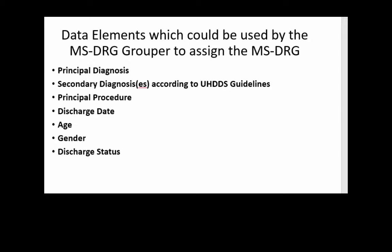The elements the grouper uses to assign the MS-DRG are: the principal diagnosis, secondary diagnoses, principal procedure, discharge date, age, gender, and discharge status. The principal diagnosis is the most heavily weighted factor for which major diagnostic group a case goes into. Secondary diagnoses are chosen based on UHDDS guidelines. The principal procedure is also a major player — some MS-DRG categories are driven by the principal procedure instead of the principal diagnosis. The discharge date is important because the length of stay is significant in the formula.